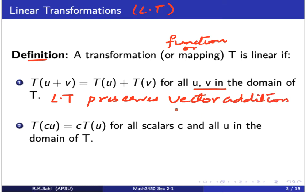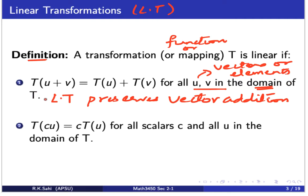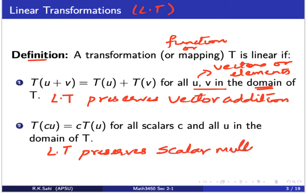You might be thinking where are these vectors coming from. They are simply another name for the elements of the domain of T. When I say u and v, they are the vectors or elements in the domain of this transformation T. The second condition for a transformation to be linear is when T acts on a scalar multiple of a vector u in the domain, it is the same as T acting on u and then the scalar is multiplied to T of u. So the linear transformation preserves scalar multiplication.